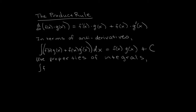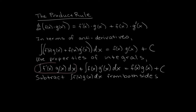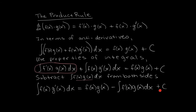Using properties of integrals we can separate the left side into two antiderivatives. Now what I'm going to do is take one of these integrals and subtract it over to the other side of the equation. This is essentially the integration by parts formula. It's not that easy to remember in the current format, so we're going to introduce some extra notation to make this formula easier to remember.